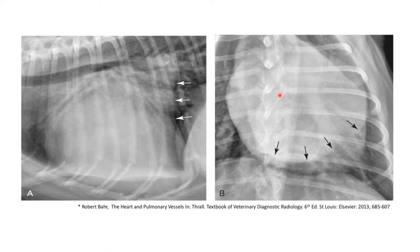The main radiographic features of mitral valve disease are a markedly enlarged left atrium and cardiomegaly resulting in dorsal displacement of the trachea and an increased angle of bronchial divergence. If the patient is decompensating into left-sided failure, we may also see enlarged pulmonary veins and increased opacity of the pulmonary parenchyma, typically centered in the hilar region and then the dorsocaudal thorax.